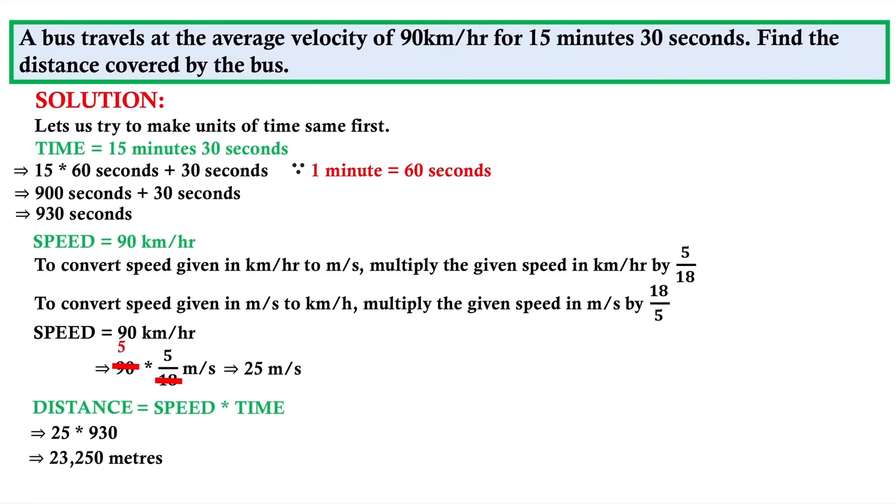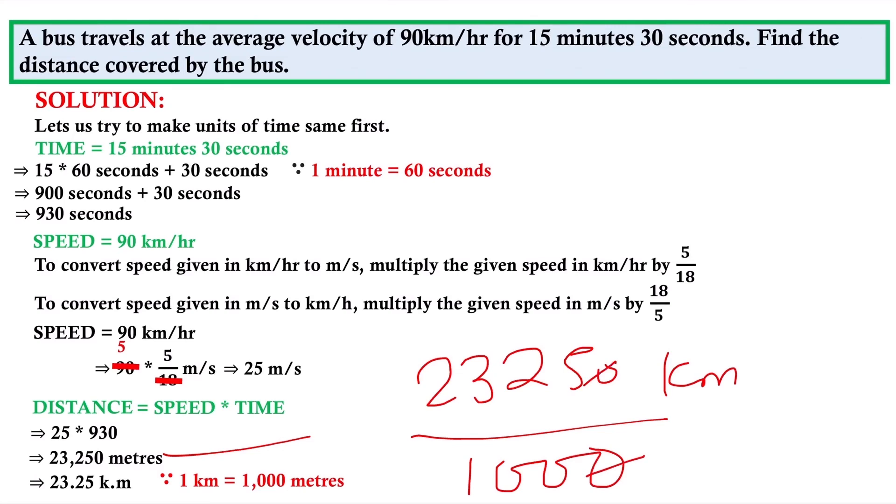The distance is big - 23,250 meters. So what can I do? I can convert to kilometers. Since 1 kilometer equals 1000 meters, divide 23,250 by 1000. That equals 23.25 kilometers. That is your final answer - 23.25 kilometer.